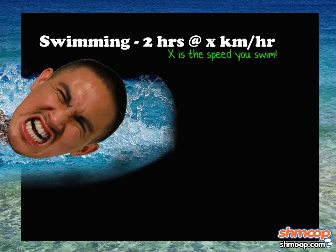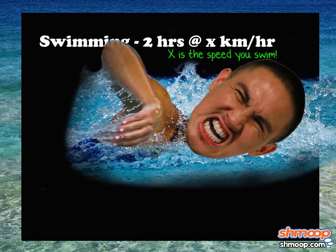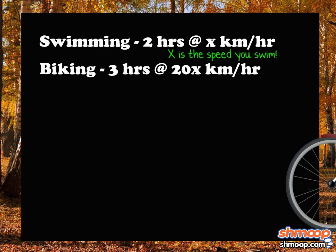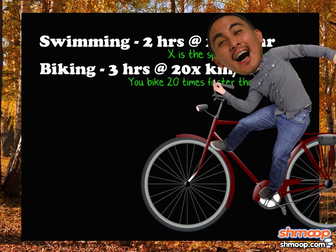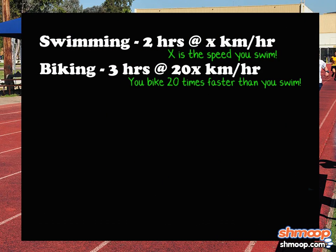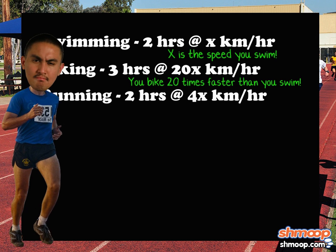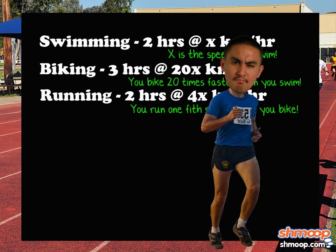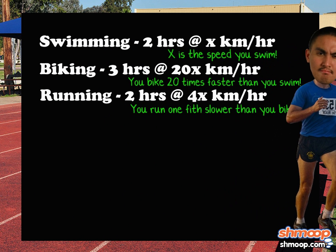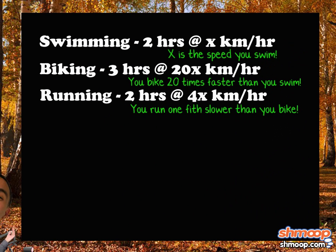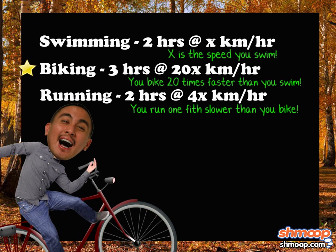In his quest for the ring, Kavi swims for two hours at X kilometers per hour, then bikes for three hours at 20X kilometers per hour, and finally runs for two hours at 4X kilometers per hour. What is his average speed while biking?